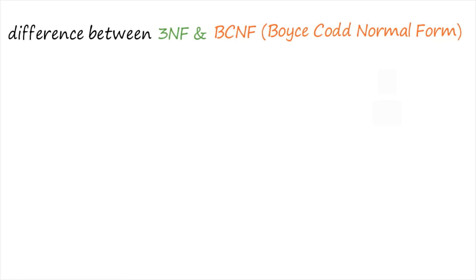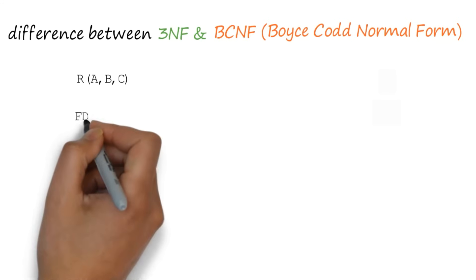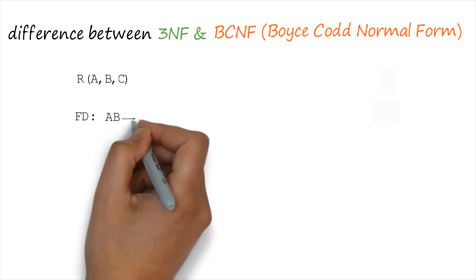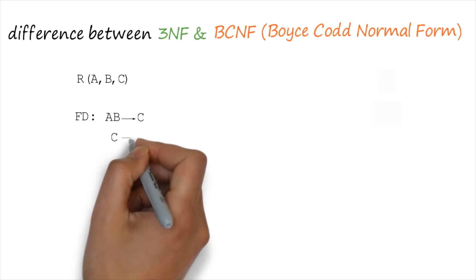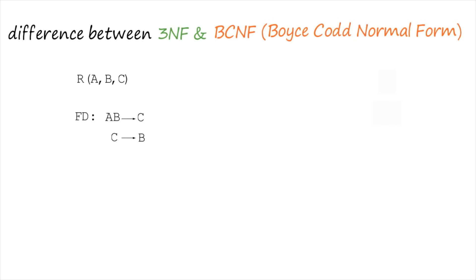First, I am giving you one example — what do you mean by Boyce-Codd Normal Form. For example, I have one particular relation R and we have some set of functional dependencies. We will learn what do you mean by Boyce-Codd Normal Form or BCNF, and why I am using this particular example. We will learn some more detail about normalization using this example.